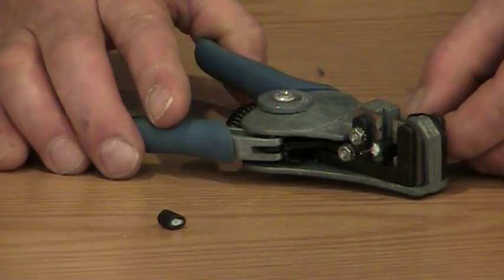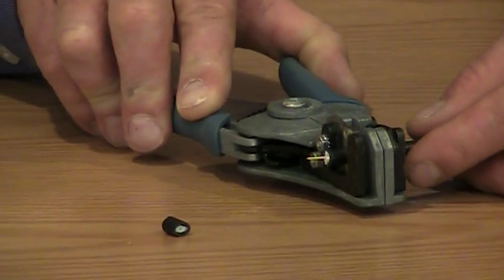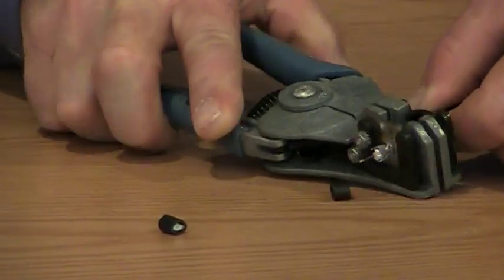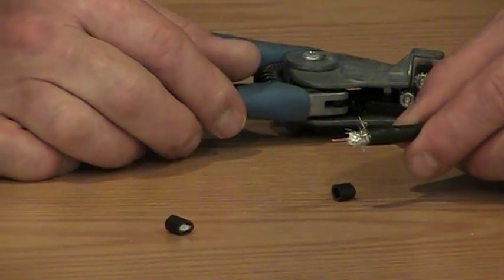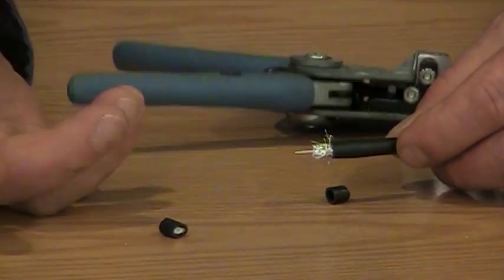Next we need to do the exact same thing with the larger hole. Again, eyeball roughly a quarter inch of outer jacketing. Squeeze the handle and it removes that material for you as well. Now we can remove the cable out of the tool, and we've just made our basic two-step strip for an F connector.